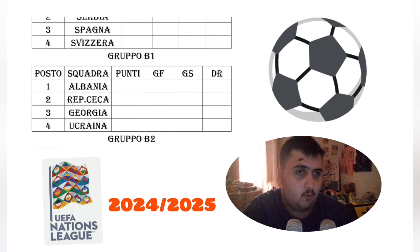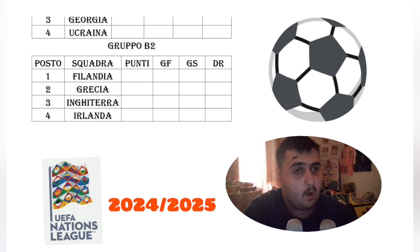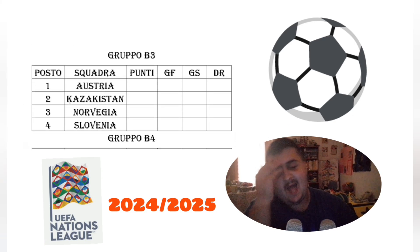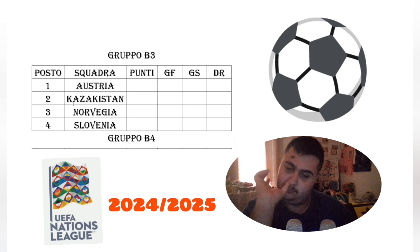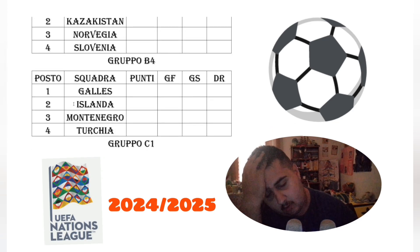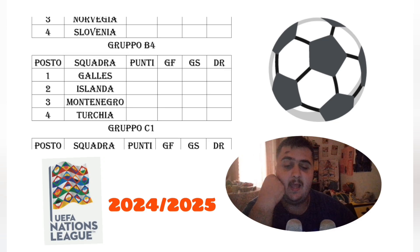Then there is League B. Group B1 has Albania, Czech Republic, Georgia and Ukraine. Group B2 has Finland and Greece. Group B3 has Austria, Kazakhstan, Norway and Slovenia. Group B4 has Wales, Iceland, Montenegro and Turkey.